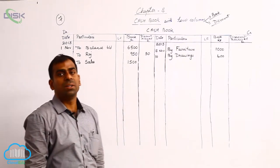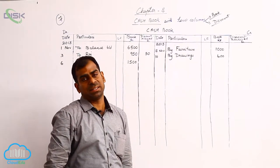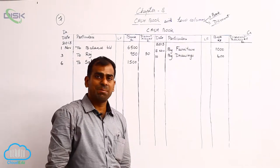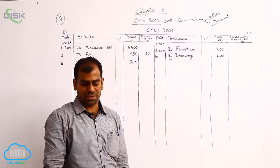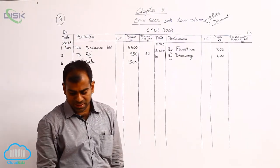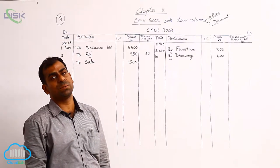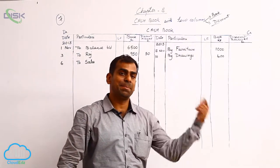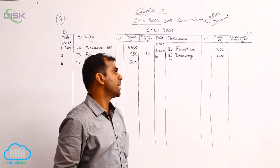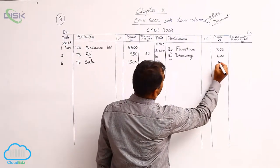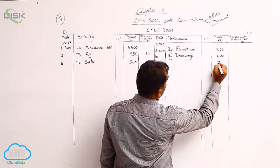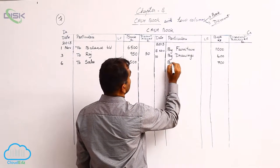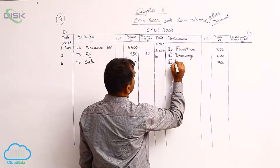Next, on the 13th, there are purchases — meaning purchase of goods for cash. As a result, 700 has to be credited because cash will be paid by the bank, so bank balance comes down. Enter 700 on the credit side.